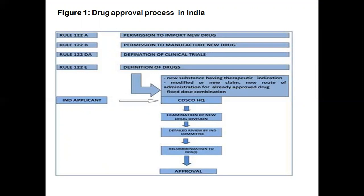The IND applicant — the inventor or organization submitting an Investigational New Drug application — first submits the application to CDSCO headquarters, the Central Drugs Standard Control Organization. It then undergoes examination by the New Drug Division, followed by a detailed review by the IND Committee. The IND Committee makes a recommendation to the DCGI — Drug Controller General of India — and the application is then either approved or, if deficiencies are found, not approved.